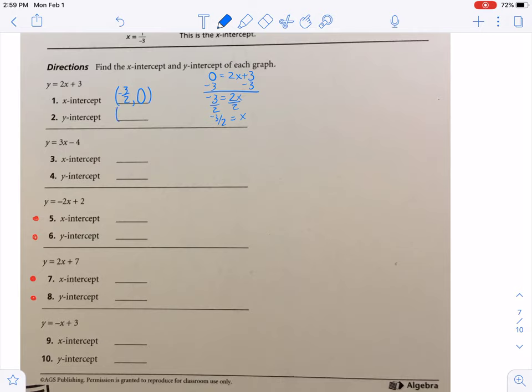Then we'll have (0, something). So we put 0 in for x. So y = 2(0) + 3, which gives y = 0 + 3, so y = 3.